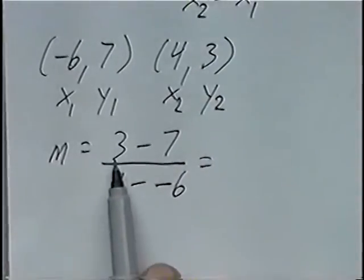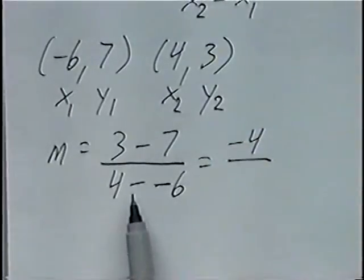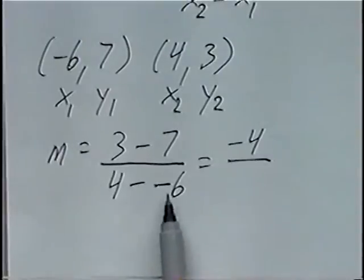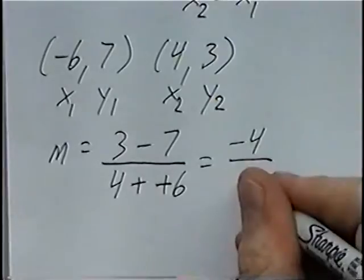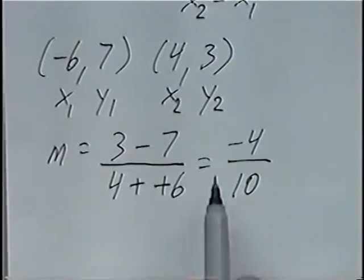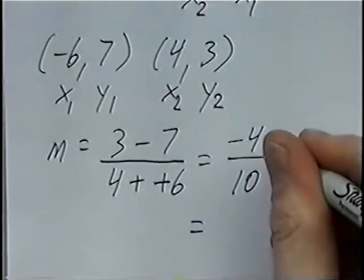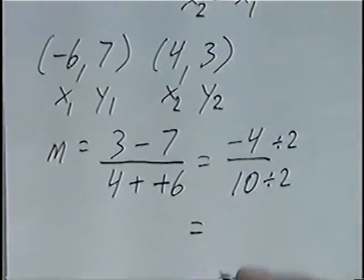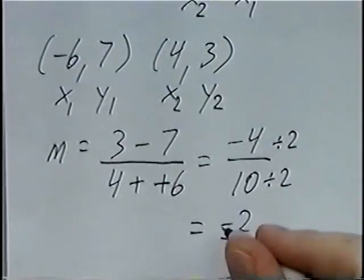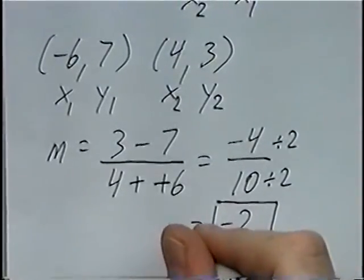Simplifying: 3 minus 7 would be negative 4. And 4 minus a negative 6 — a minus minus we can change to two positives — so we'll have 4 plus 6, which is 10. So the slope is negative 4 over 10. Reducing fractions, we can divide each of these by 2. Negative 4 divided by 2 is negative 2, and 10 divided by 2 is 5. So the slope would equal negative 2 over 5.